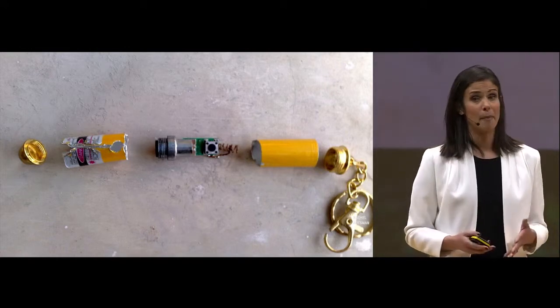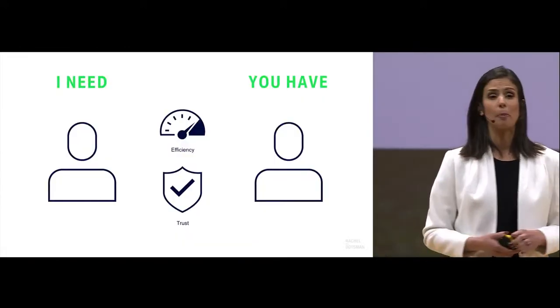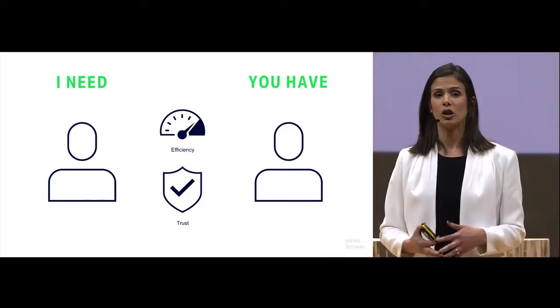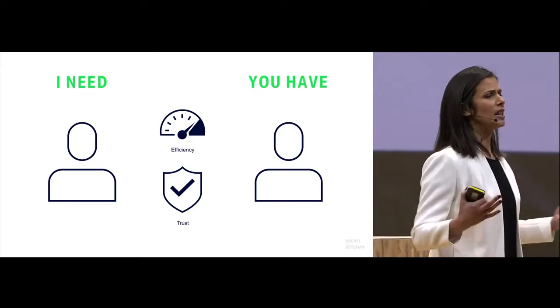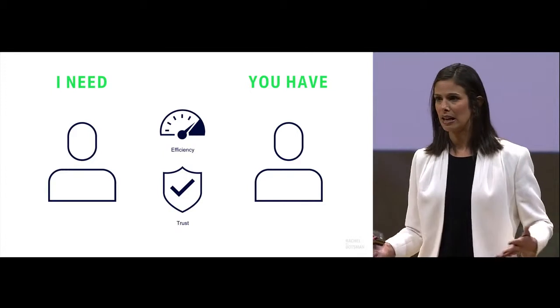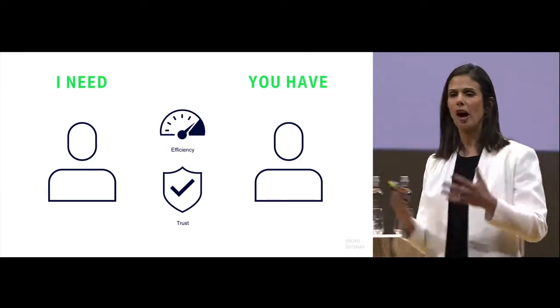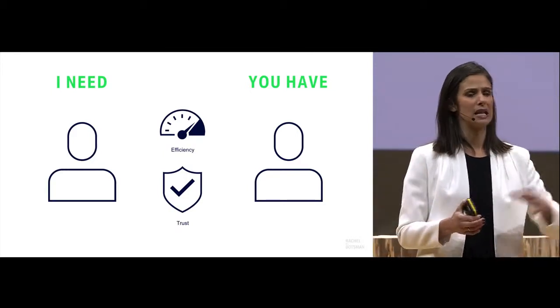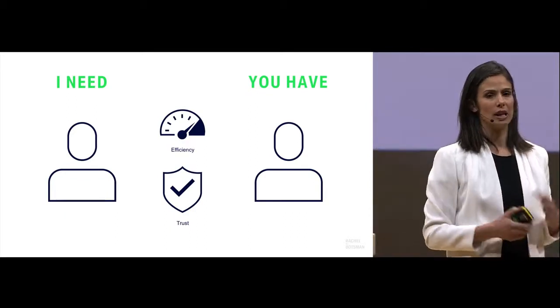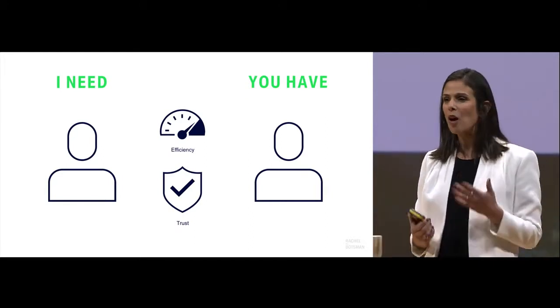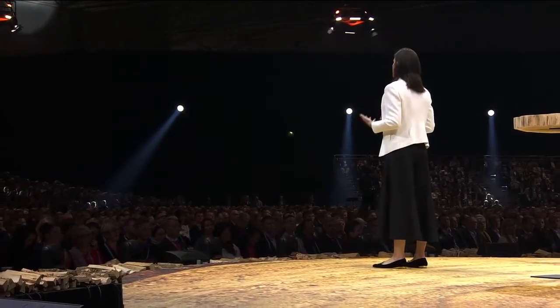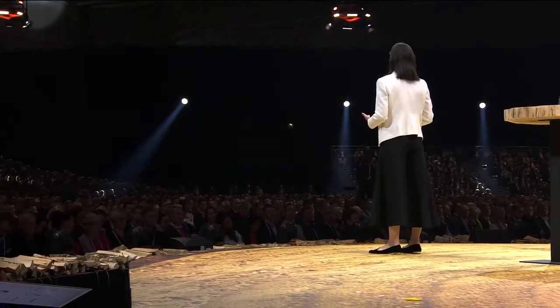What he realized in that moment was actually something very profound. He was a visionary in seeing how technology would do two things. The first thing he saw was how technology would create the efficiency to match supply and demand, that you have a need and someone else has a have, and that we can now connect through the internet. But what Pierre also saw was how technology would transform the way we could trust strangers.